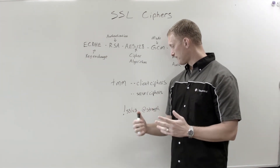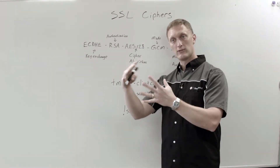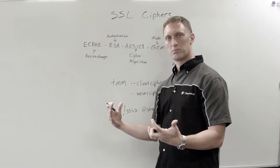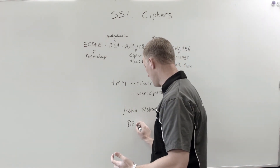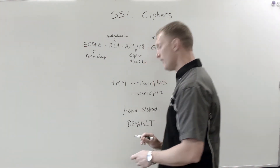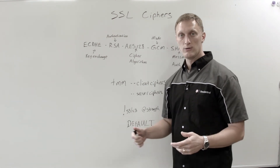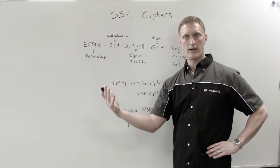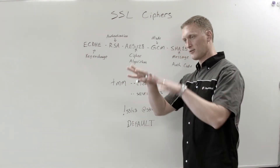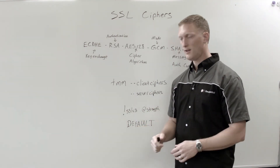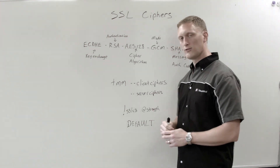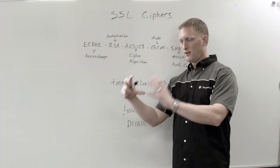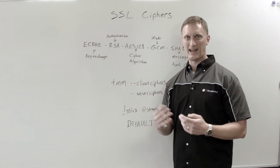The point isn't to go through every single option, but to let you know there are ways to modify these things. One important note: if you use the 'default' profile — and you can't be blamed, it's easy and it's a great starting point — the default changes with each version of TMOS. If you go from 11.5 to 11.6 or 12.0, the default changes. But if you've used these modifiers to exclude SSLv3 or promote certain ciphers, those specific settings will persist and won't be affected as the default changes.